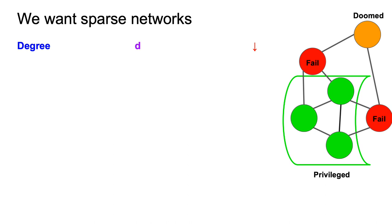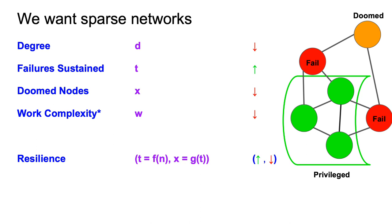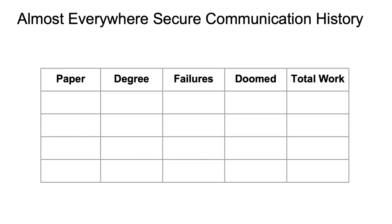Thus, we want graphs of low degree with communication protocols that can sustain many failures, while dooming as few nodes as possible, and doing as little computational work as possible. In short, we want high-resilience networks, sustaining T equals FFN failures, while dooming at most X equals GFT nodes. Since not all failed nodes are privileged communicators, we call protocols for this problem almost everywhere secure communication protocols.